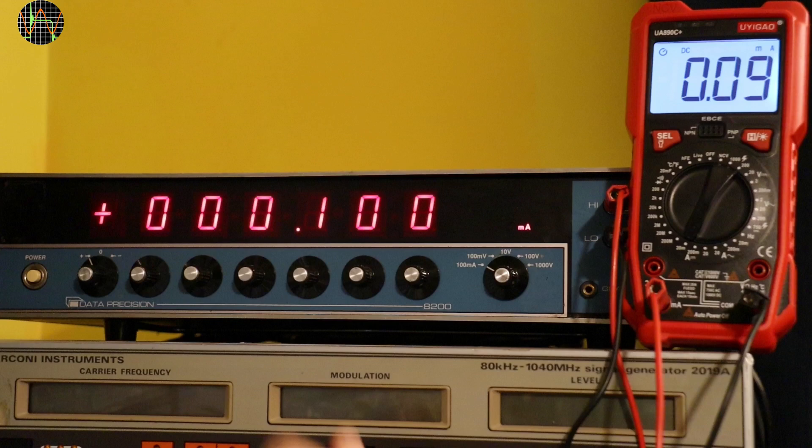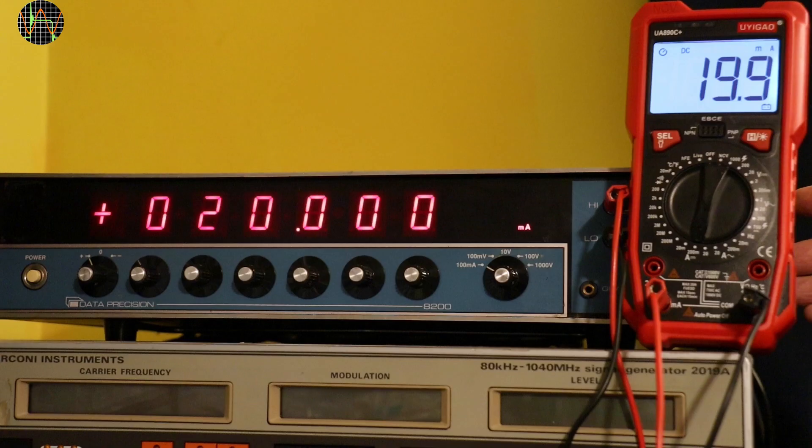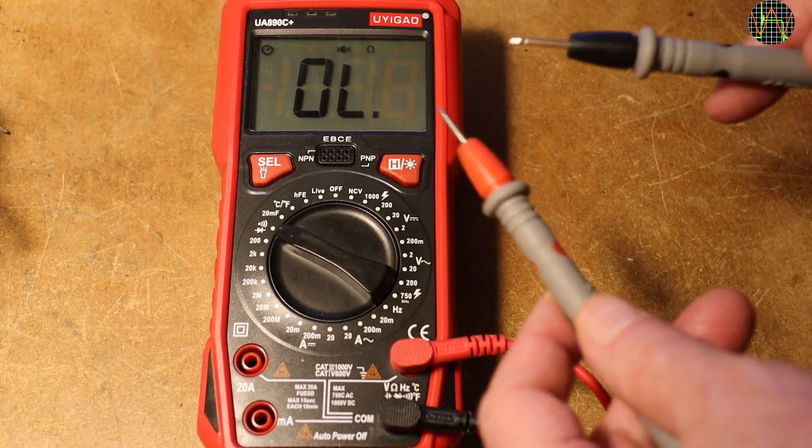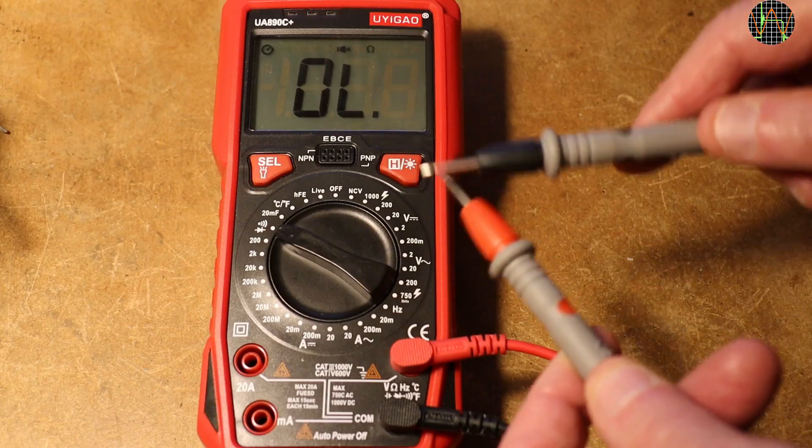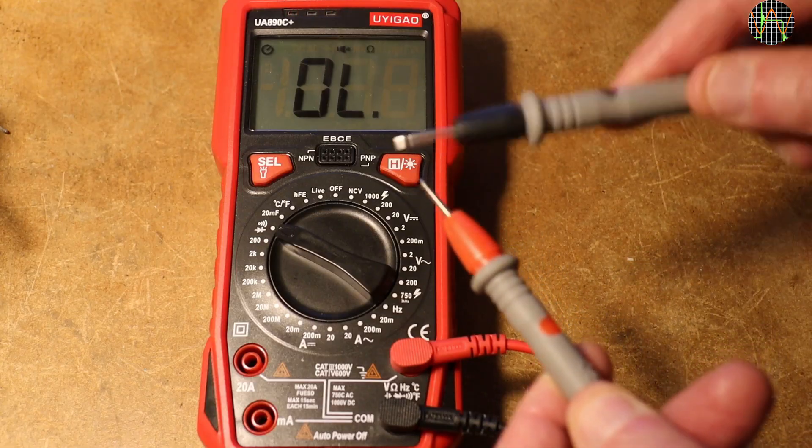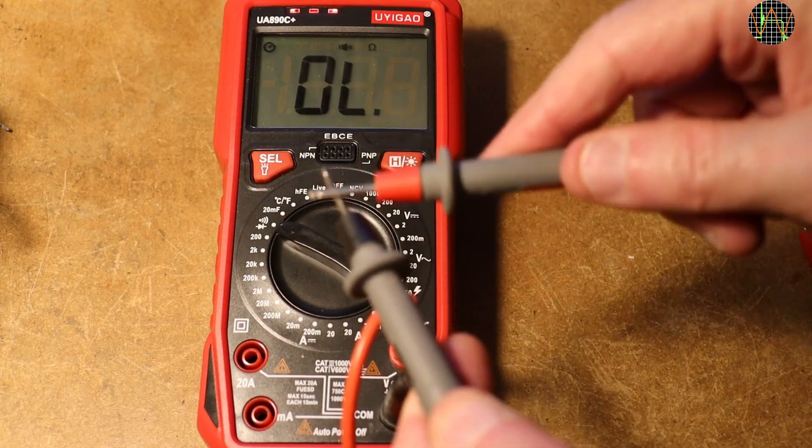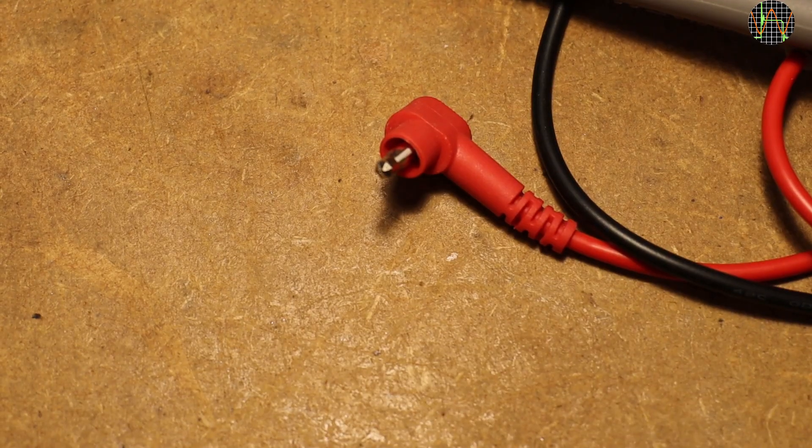DC currents now. 100uA in the 20mA range. Ok. 1mA. 10mA fine. 20mA in the 200mA range. 100mA. Ok. The meter is always just a little low but still quite accurate. I almost forgot continuity. Ok, here goes. Pretty dreadful. But to be fair, that could be because of the low quality probes. Replacing them with good quality ones. And what a difference that makes.